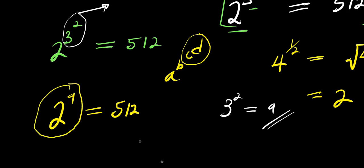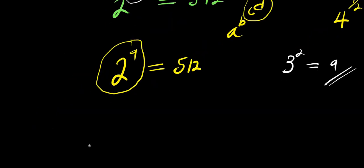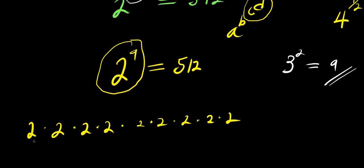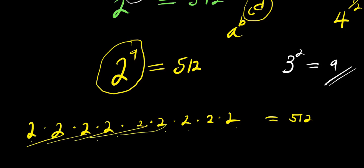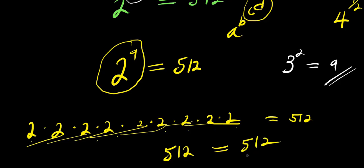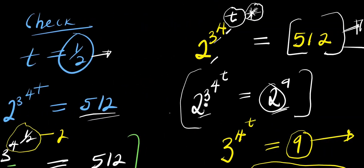We can verify 2 to the power of 9 by multiplying 2 nine times: 2 × 2 × 2 × 2 × 2 × 2 × 2 × 2 × 2. Multiplying out: 2×2=4, 4×2=8, 8×2=16, 16×2=32, 32×2=64, 64×2=128, 128×2=256, 256×2=512. This confirms 2 to the power of 9 equals 512, so the left-hand side equals the right-hand side, showing the correctness of our solution.